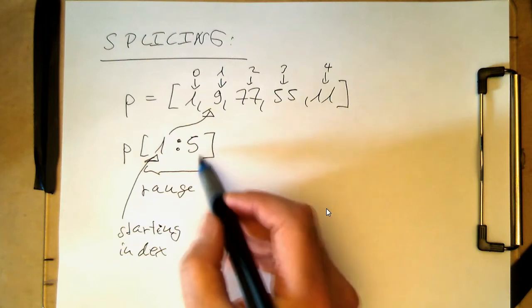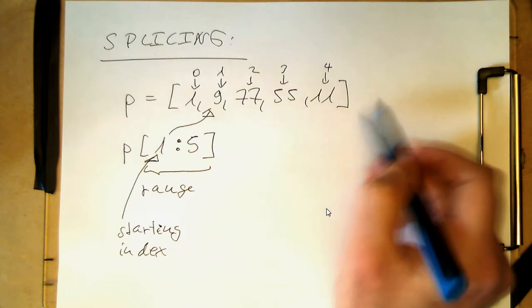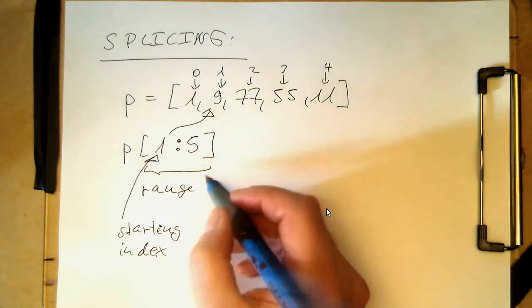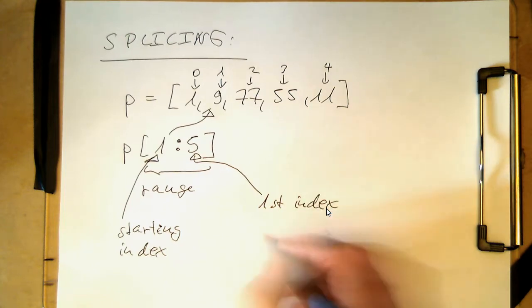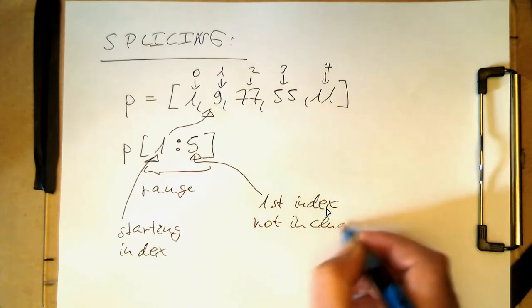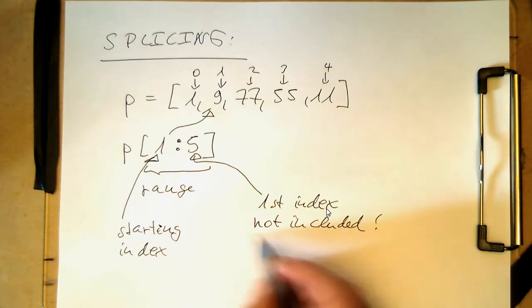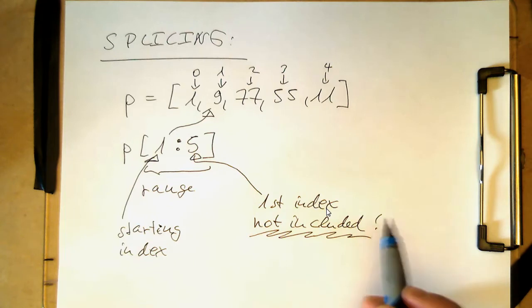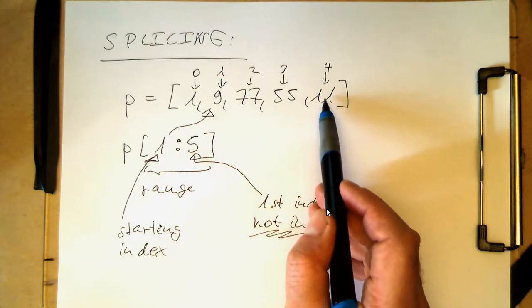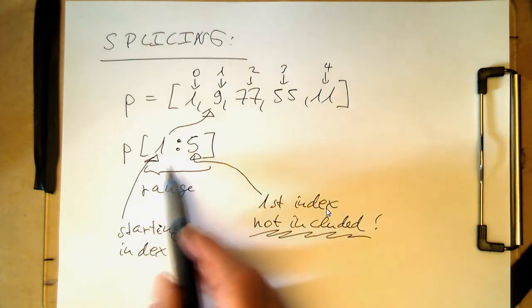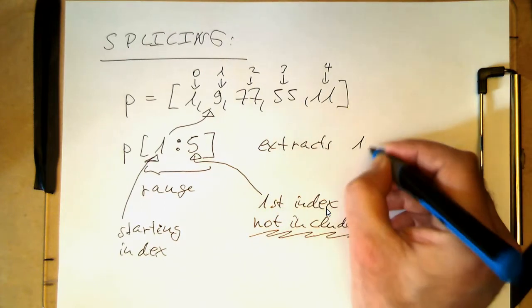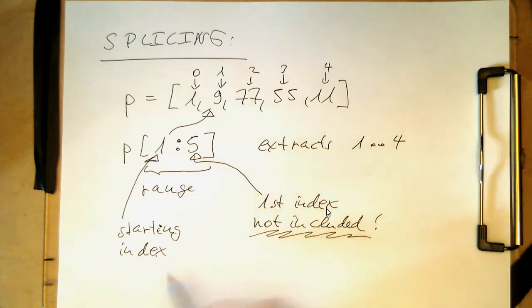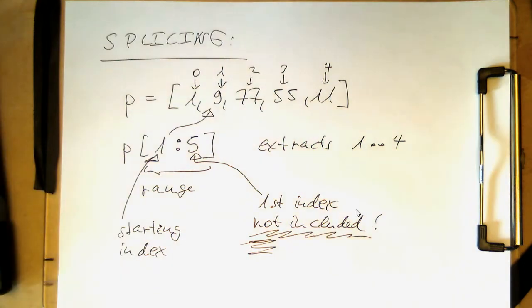One might assume the 5 means index number 5, but we don't have any element there, so this should create an error. But the 5 means here this is the first index not included. That's a very important aspect. This means the last index taken is index number 4. So this extracts anything from index number 1 to index number 4, because the 5 is the first one not included. That's a bit special.